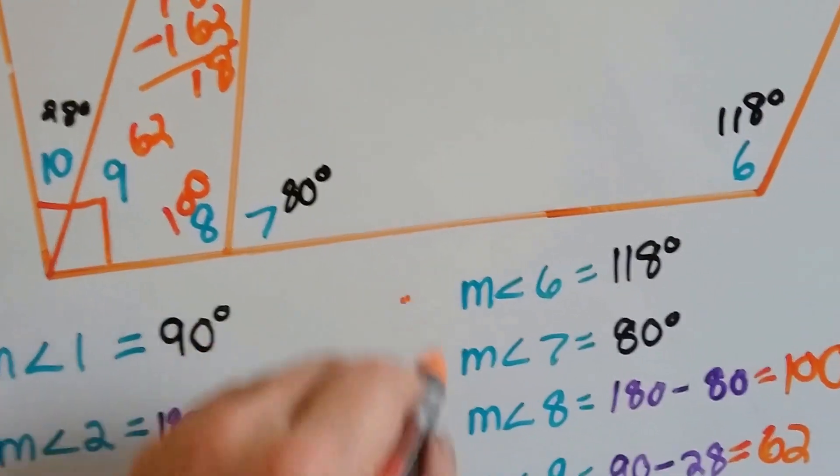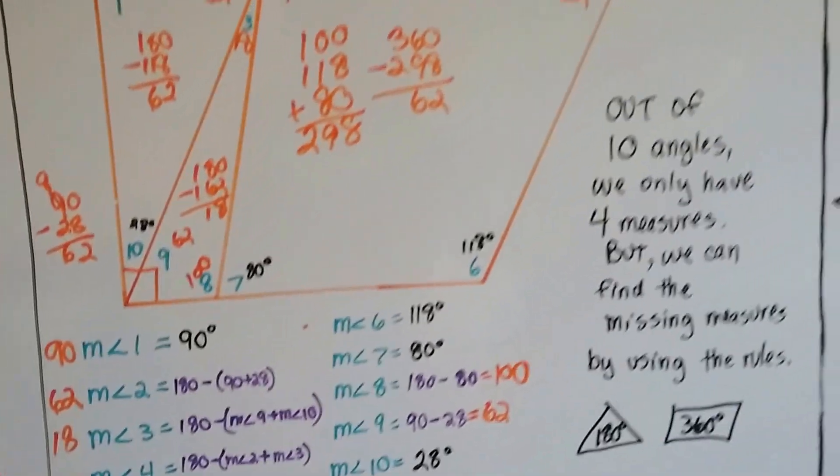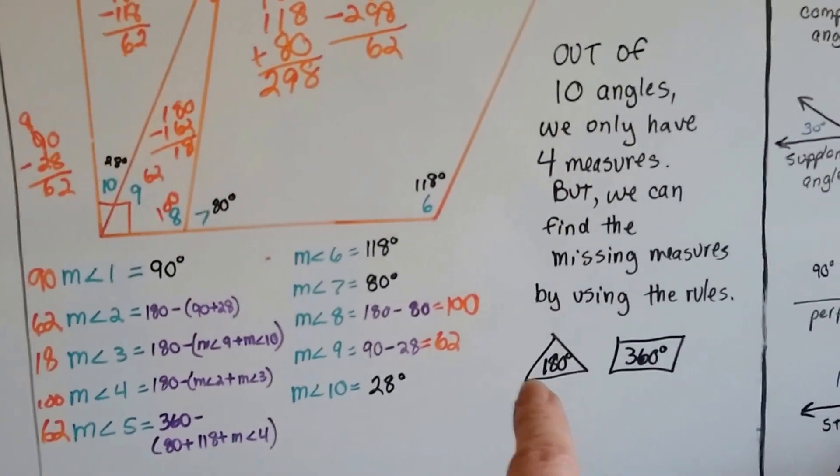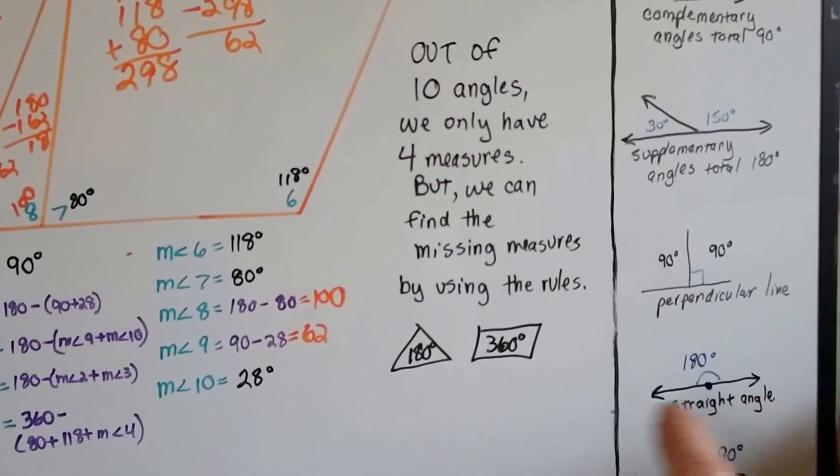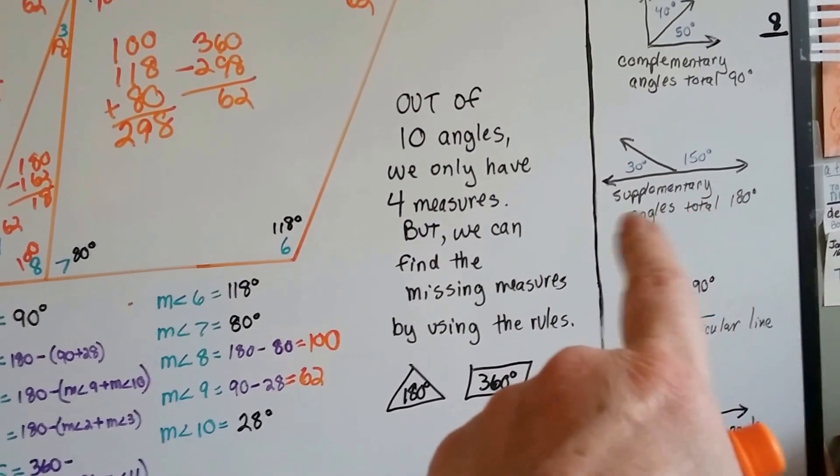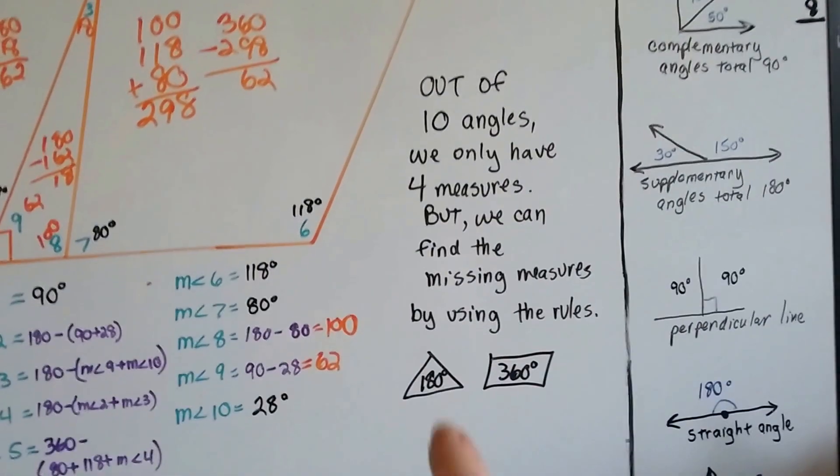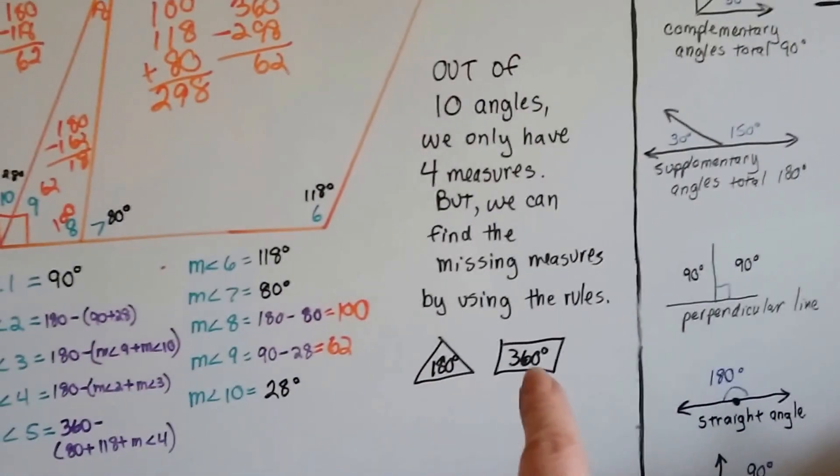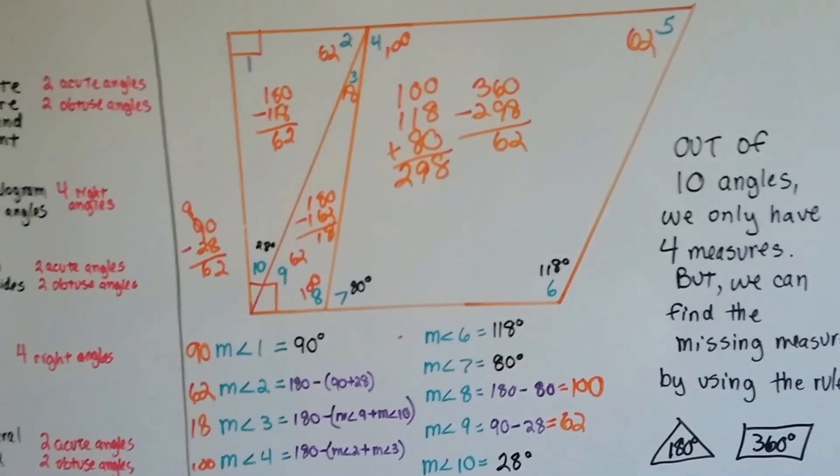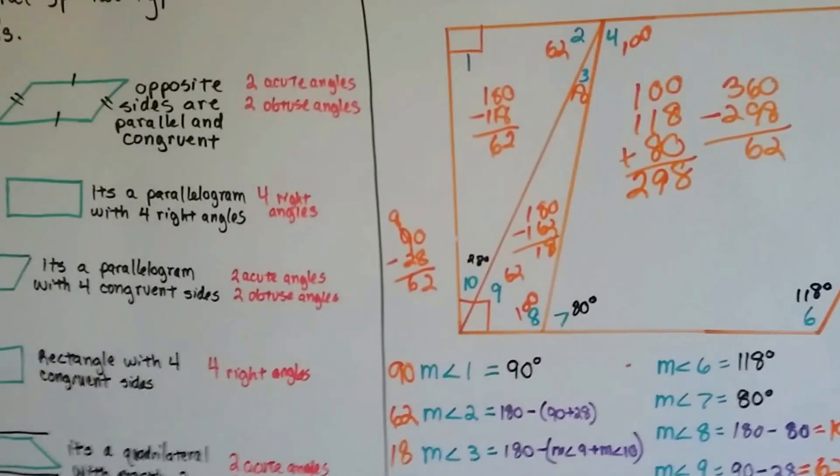We've got them all now, don't we? Look at that. We've got all the measures now, and we only had 4 to begin with. But by using our rules of a straight angle is 180 degrees, and supplementary angles total 180 degrees, and complementary angles total 90 degrees, and the interior of a triangle is 180, and the interior of a quadrilateral is 360, we were able to find all those missing 6 measures. See? Detective work. You can do this too.